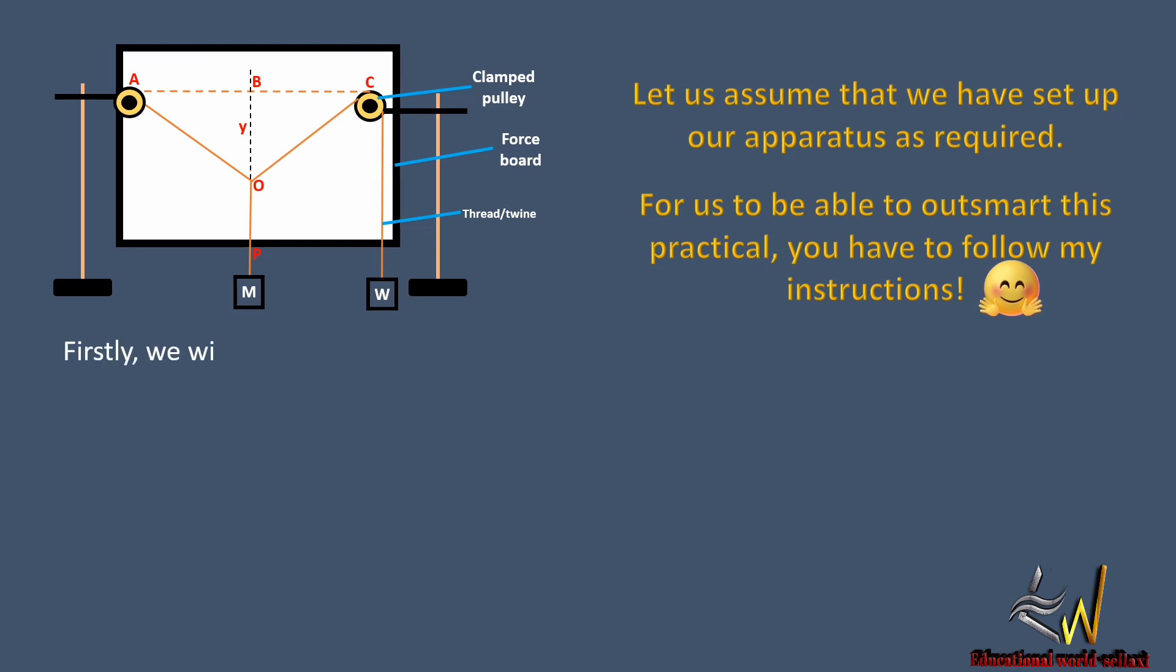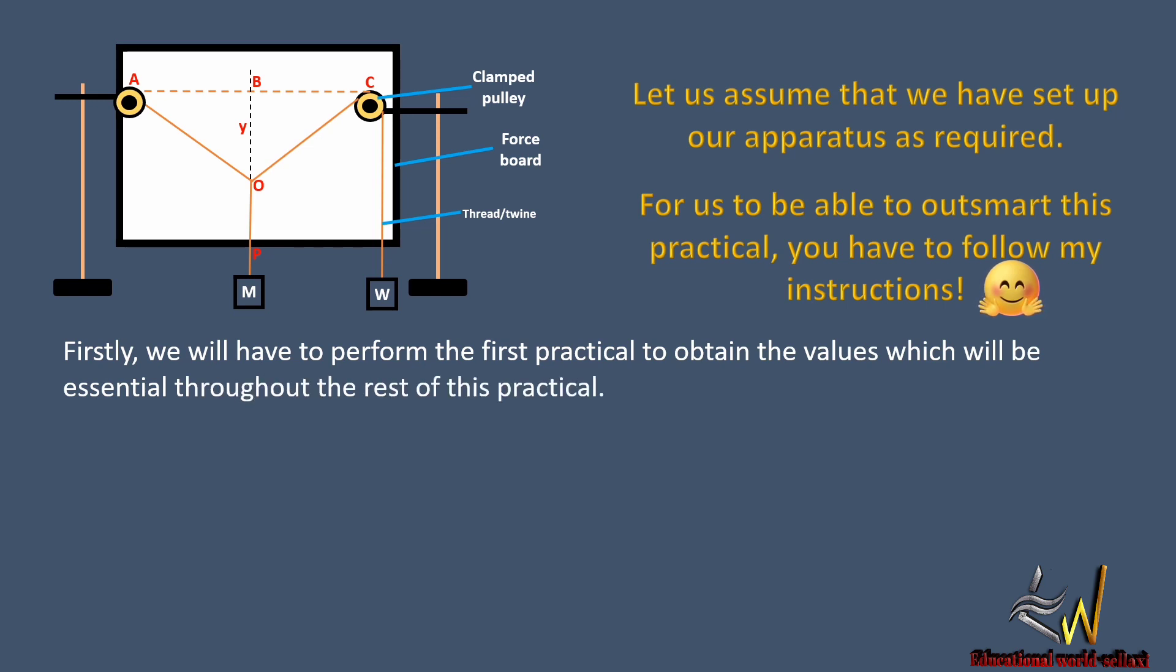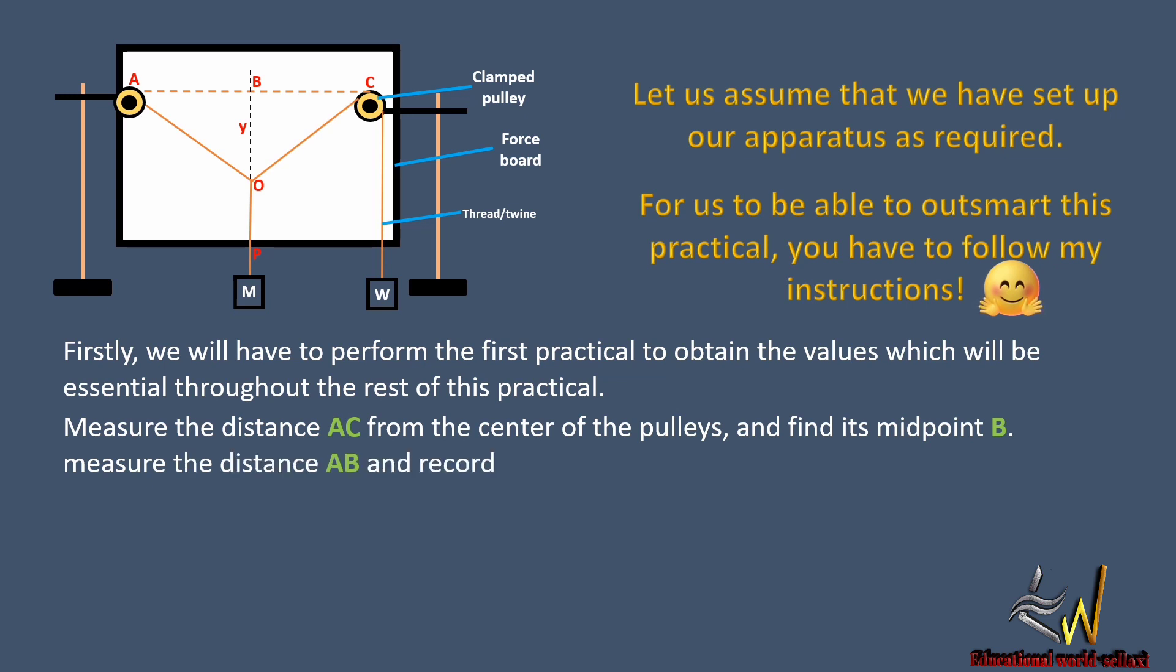Firstly, we have to perform the first practical to obtain the values which will be essential throughout the rest of this practical. Measure the distance AC from the center of the pulleys and find its midpoint B. Measure the distance AB and record it, for it is a constant throughout this experiment.